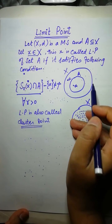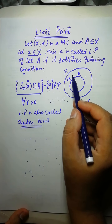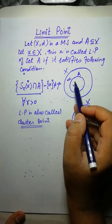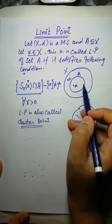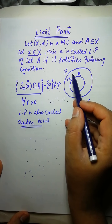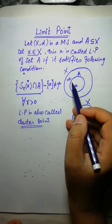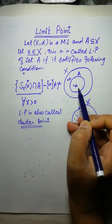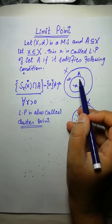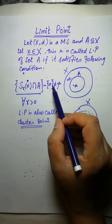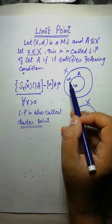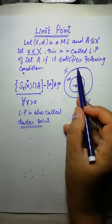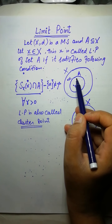Or x can be selected from outside A — that is, from the complement of A. So elements that belong to the complement of A can also be limit points. This is very important: any element inside the set and any element outside the set can be checked. You can check every element in the metric space for limit points.